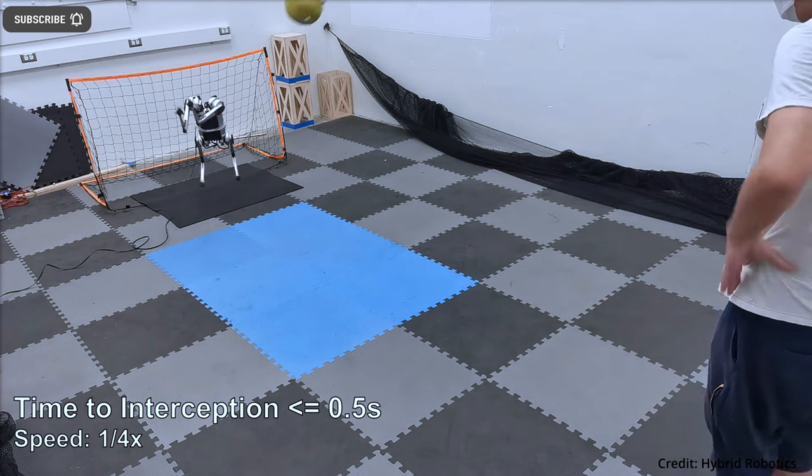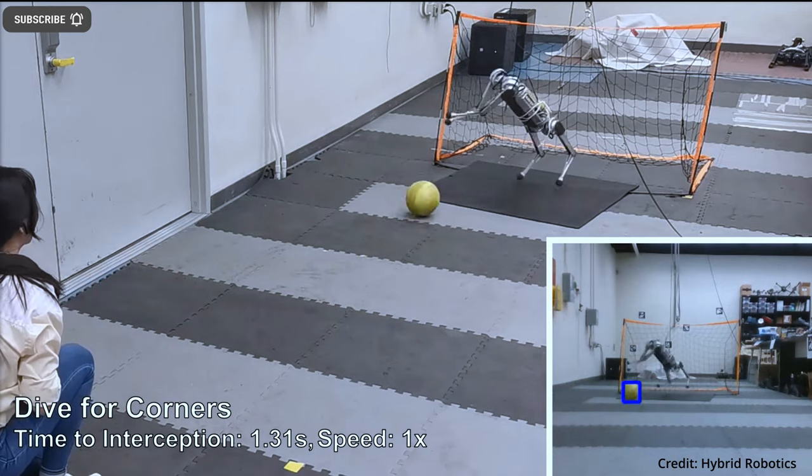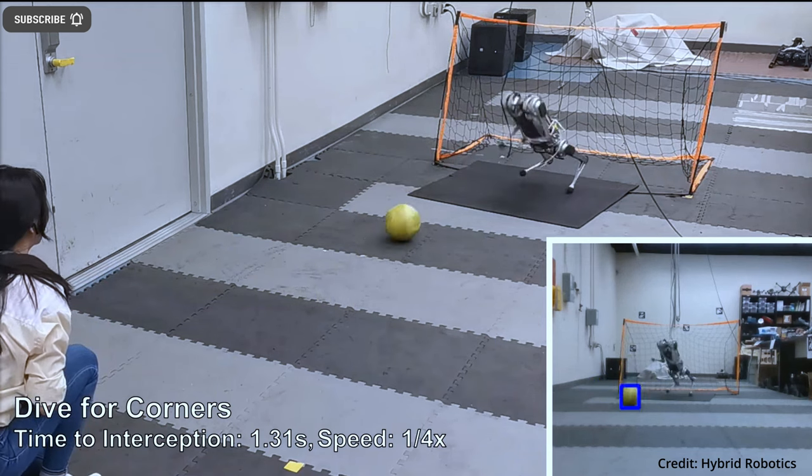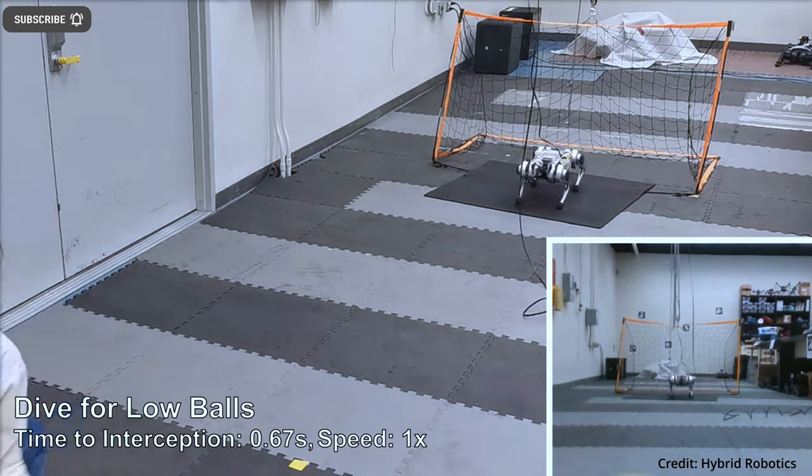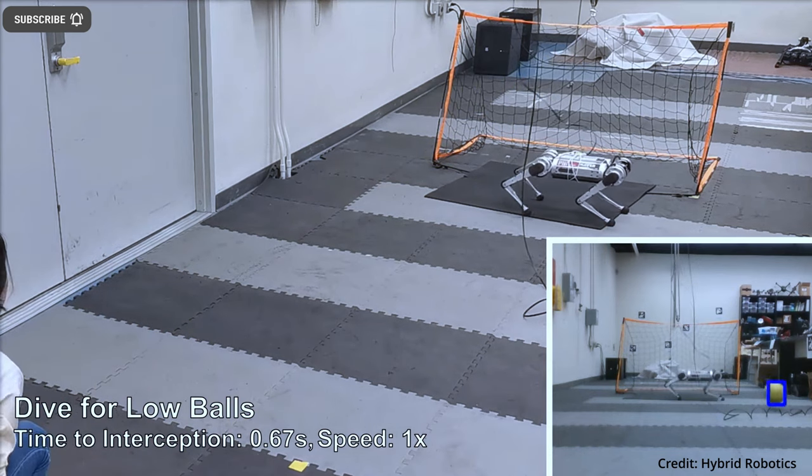Robot dog learns soccer skills. Researchers from the Hybrid Robotics Lab at the University of California, Berkeley have trained a robot dog to be a soccer goalkeeper, which has a better shot blocking rate than Premier League human players.